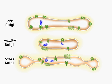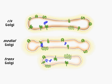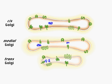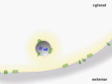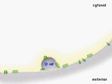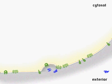Proteins destined for secretion after modification in the Golgi are transported from the trans Golgi to the plasma membrane. When the membranes fuse, the proteins are released into the extracellular space.